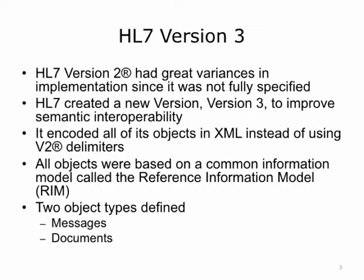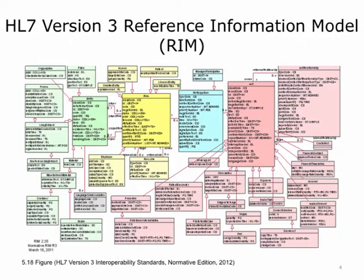There were industry tools available to process XML formats. Two object types were defined for Version 3: messages and documents. The V3 messages were similar in functionality to V2 messages. V3 documents satisfied an outstanding need for which no standard yet existed — the need to provide a structured format to clinical documents. This is a picture of the HL7 Version 3 Reference Information Model, where each box represents a class and contains attributes, and the lines between classes signify their relationships. The premise of the RIM is that the universe of healthcare is divided into acts and roles.